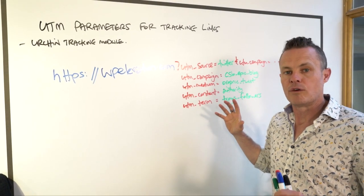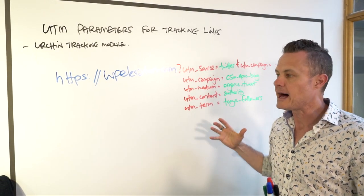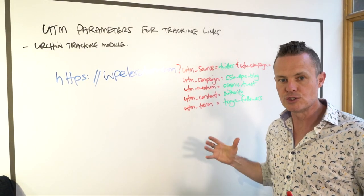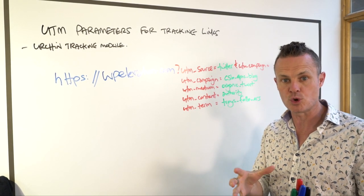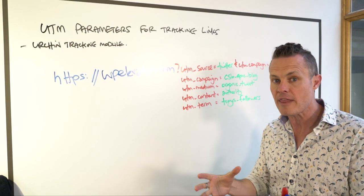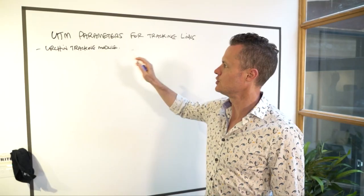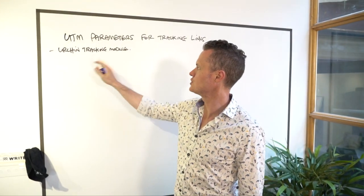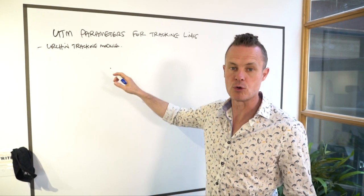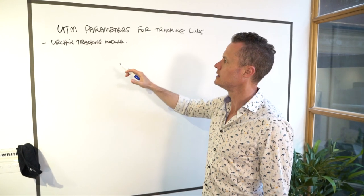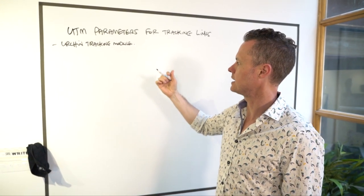This is an overview of UTM parameters — what they are and how you can use them to track where traffic is coming from to your website, why they've arrived, and how they got there. UTM stands for Urchin Tracking Module. Urchin was a web analytics software company before Google came along, and they kind of invented the UTM parameters.